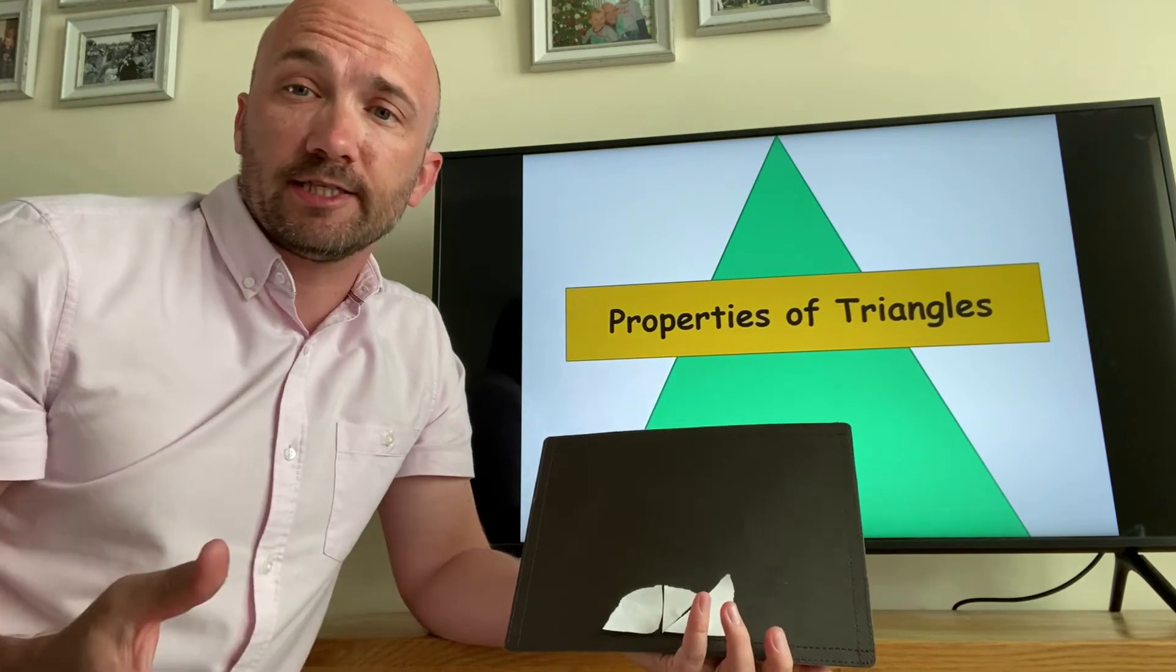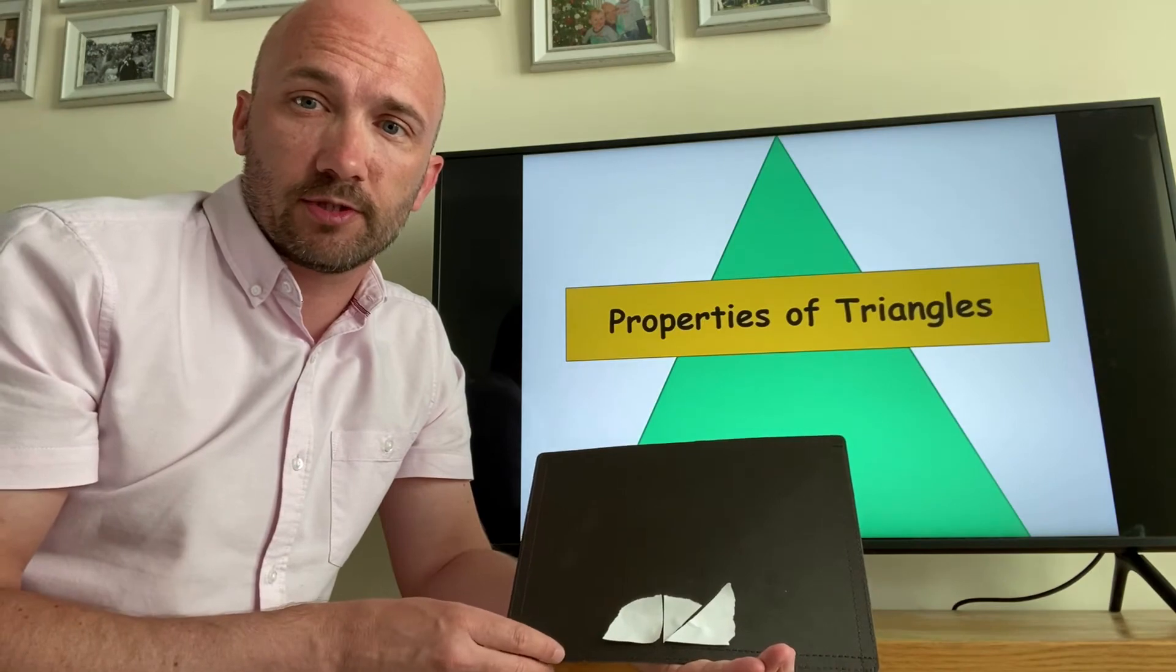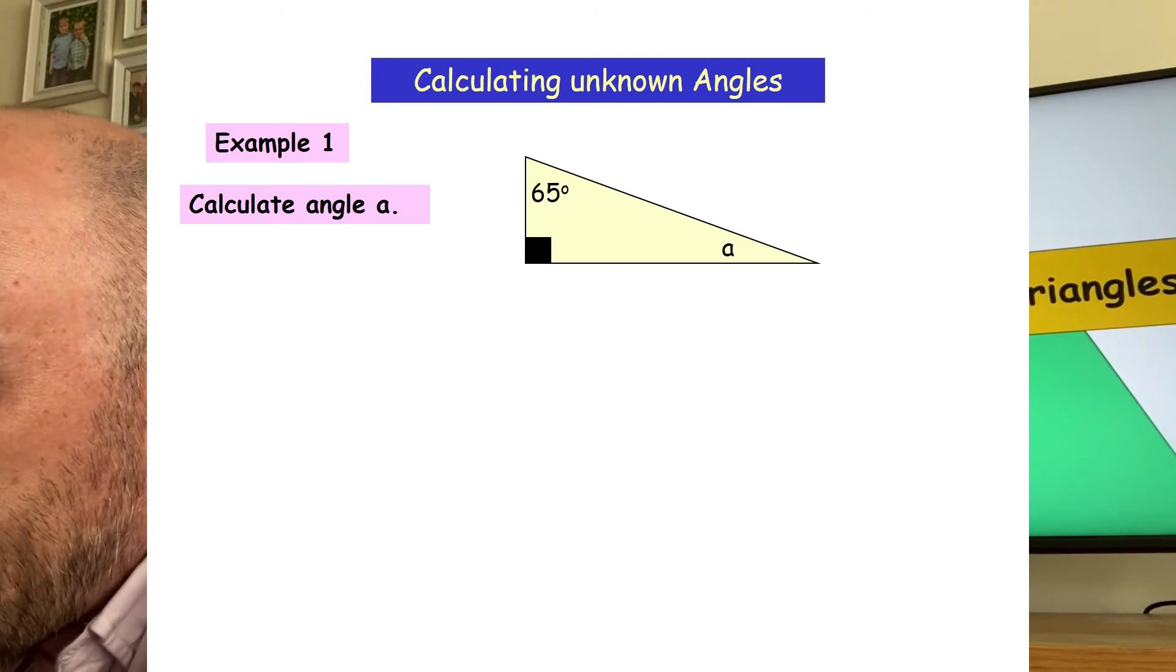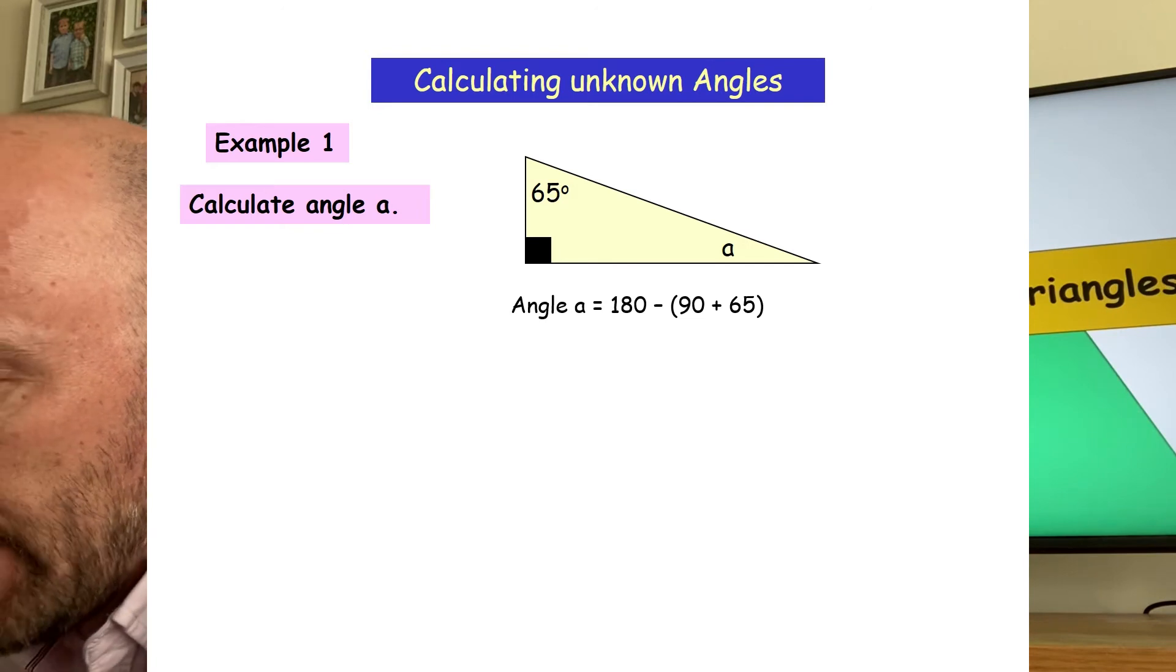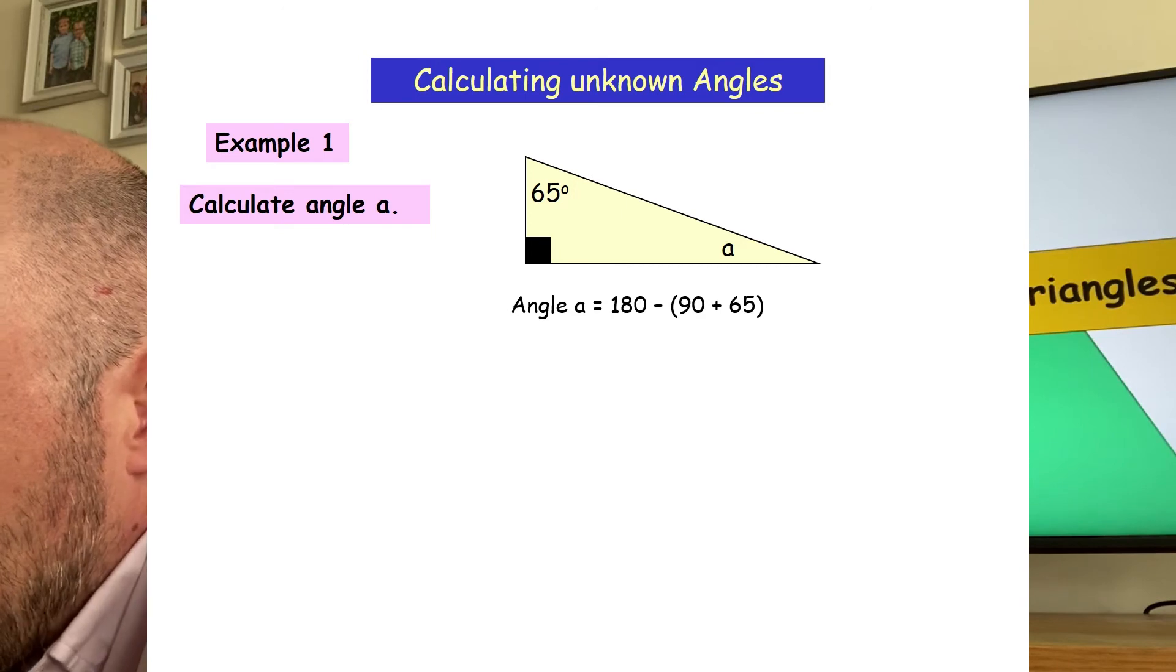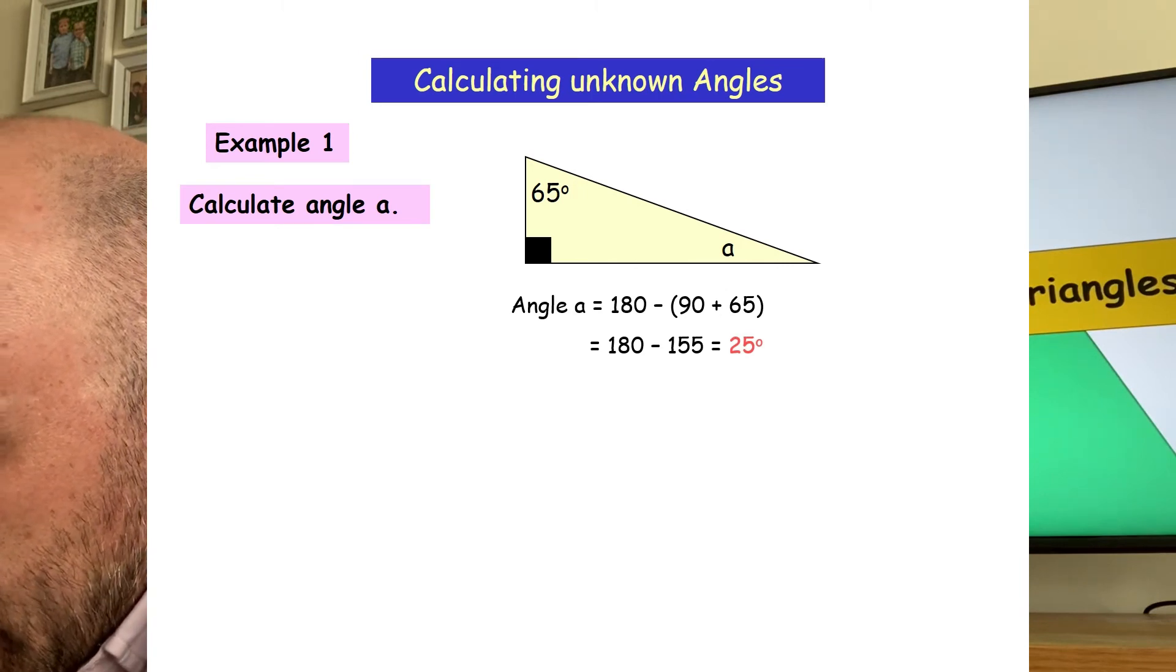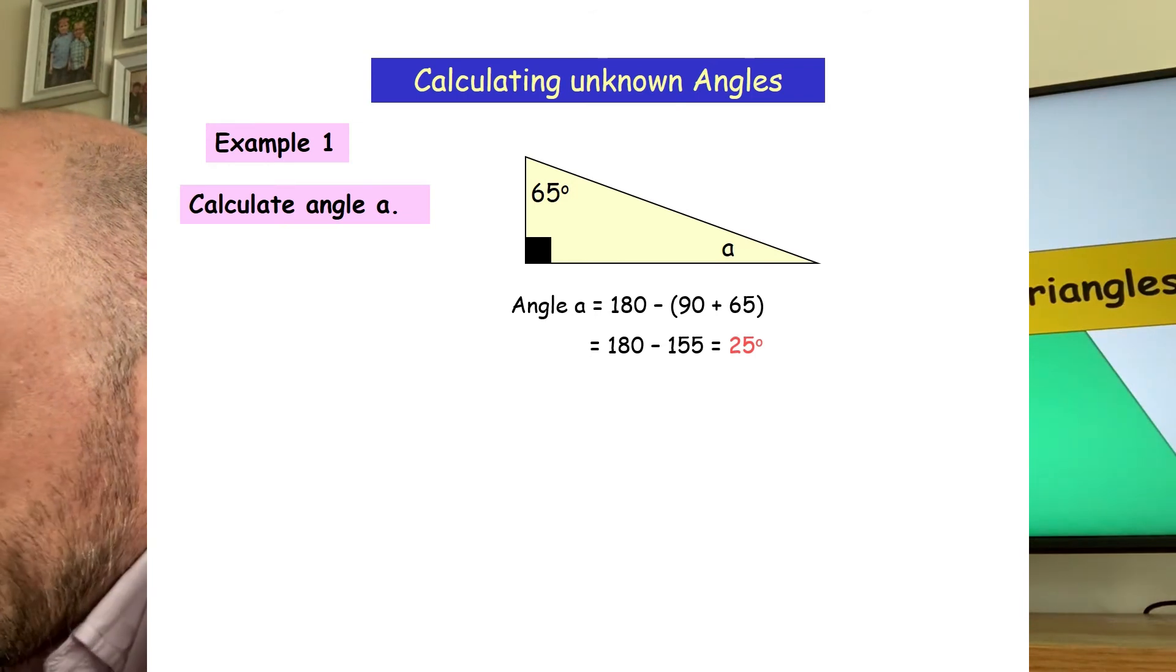Now this week you're going to need to know how to calculate missing angles for different types of triangles. So here's some tips on how to do that. My first example: angle has 65 degrees in one corner and it has a right angle in the other, which is 90 degrees. So I need to add those two together, which gives me 155, and then subtract that from 180, which leaves me with 25 degrees. So angle A is 25 degrees.